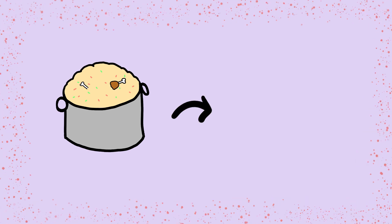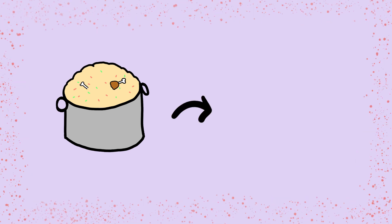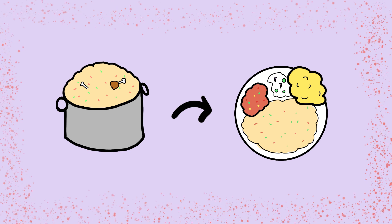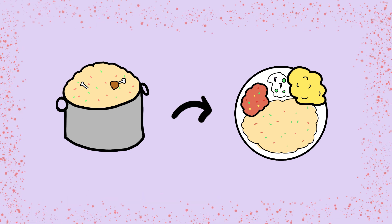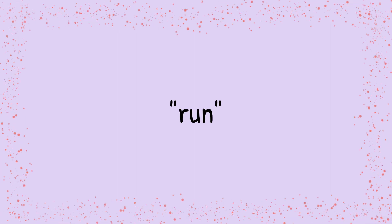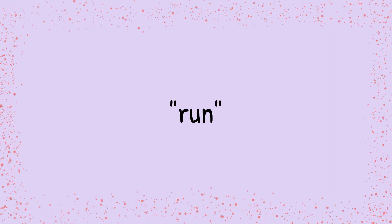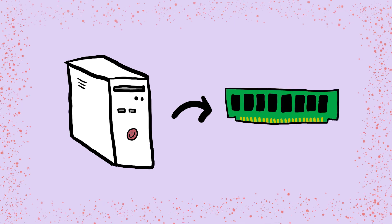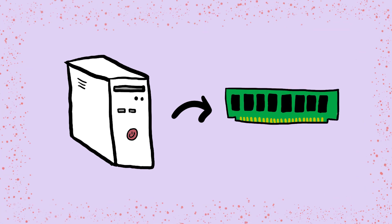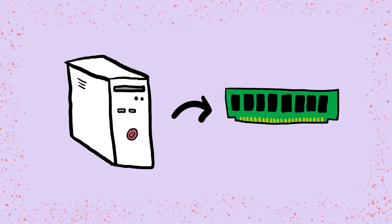In order for you to eat the biryani, you first need to take it from the pot and serve it in your plate so that you can access it easily and start eating. It's easier to eat from a smaller plate than a huge pot. Similarly, in order for a program to run, you need to take the corresponding code from wherever it is stored in the disk and place it in the RAM so that the CPU can access it easily and execute that code.